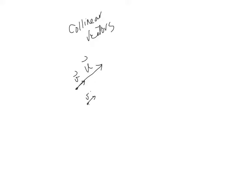The direction is not important. For instance, I can have u like this and v in the opposite direction. Still, if I put the tail on top of each other, you can see that the vectors lie on the same line. So, these are collinear, but opposite direction. But, if I have a vector u and a vector v that are not on the same line when I put the tails together, then these are not collinear.